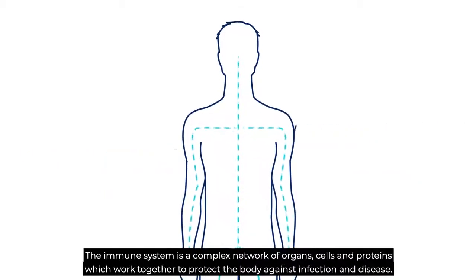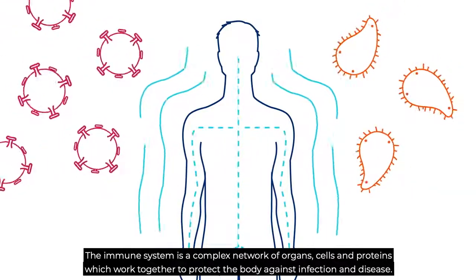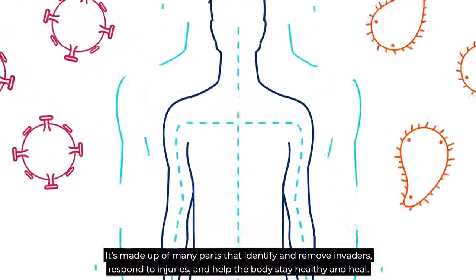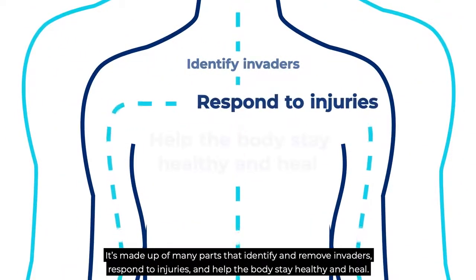The immune system is a complex network of organs, cells, and proteins which work together to protect the body against infection and disease. It's made up of many parts that identify and remove invaders, respond to injuries, and help the body stay healthy and heal.